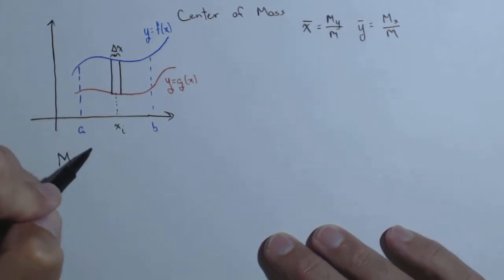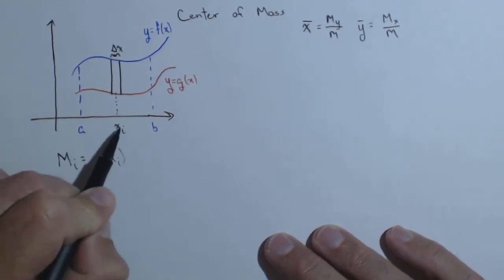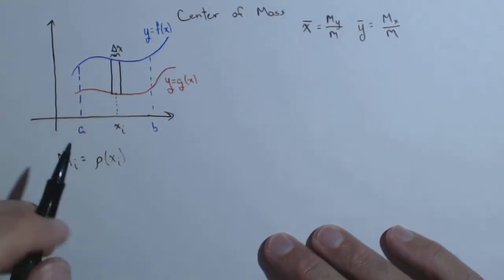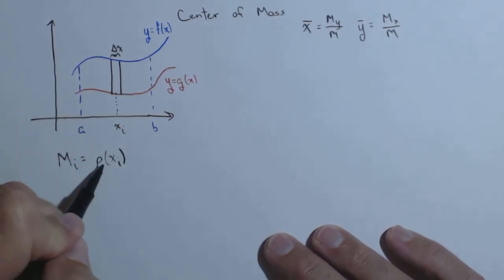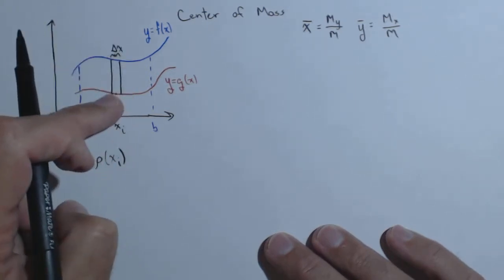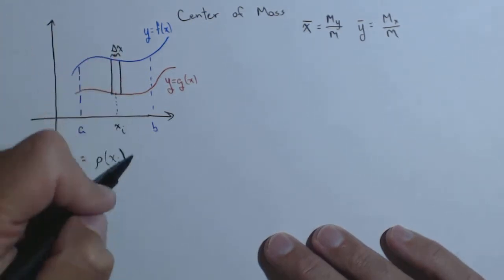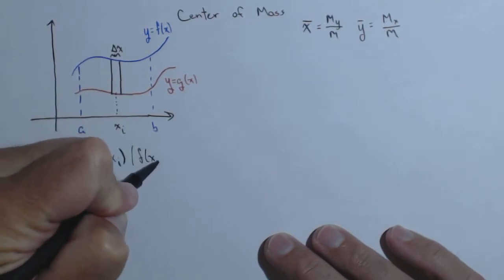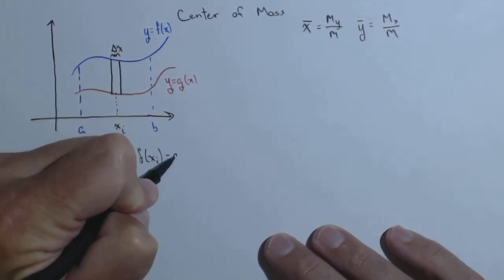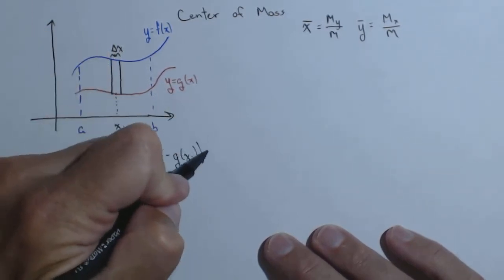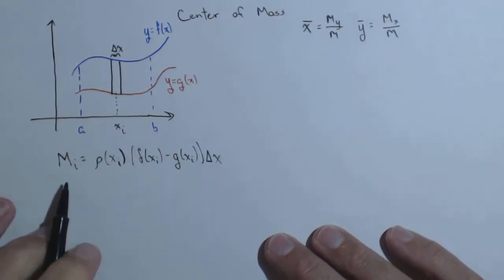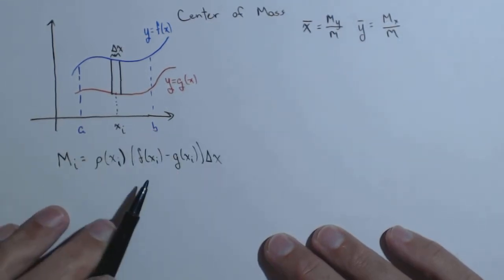Well, the mass of the i-th slice is going to be the density at x sub i. Again, we're choosing that slice so small that we can assume the density's constant. This is if we have a varying density. We'll talk about if we don't at the end. So we have the density of that i-th slice times the area of that i-th slice. Well, that's going to be f of x sub i minus g of x sub i, which is the height of this rectangle, times delta x. So there's the mass of the i-th slice.